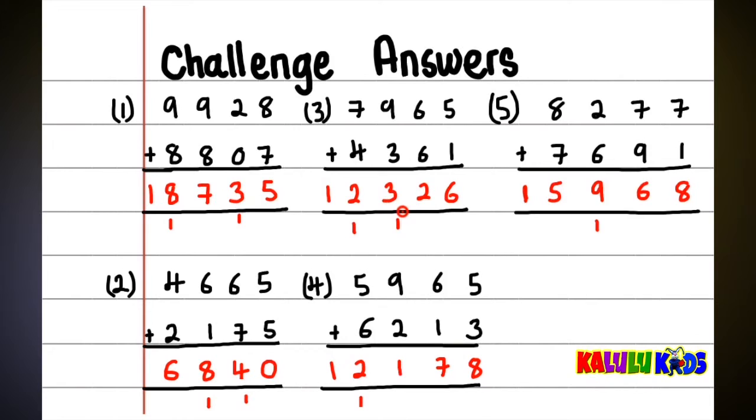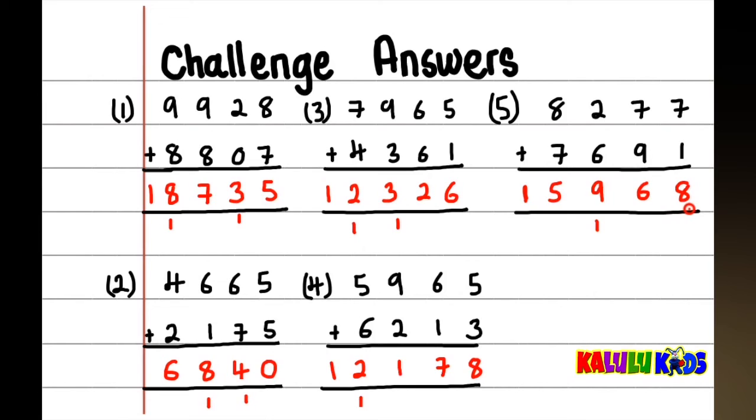Number 4, the answer should be 12,178. Finally, number 5, should be 15,968. If you got this right, you are on your way to phase 5.